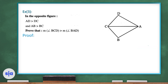Exercise number 3: In the opposite figure, AD is greater than DC and AB is greater than BC. We need to prove that the measure of angle BCD is greater than the measure of angle BAD.